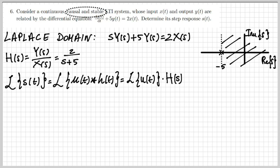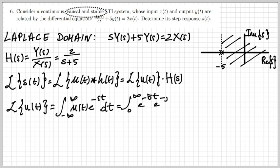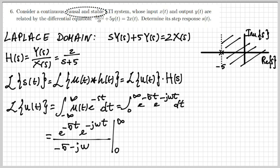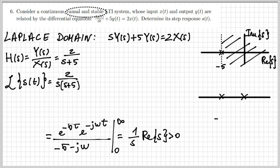The step response S(t) is the convolution of u(t) with the impulse response, so its Laplace transform is the product H(s) times the Laplace transform of u(t). Computing the Laplace transform of u(t) via a simple integral gives one over s, which converges only when Re(s) is positive. So the Laplace transform of S(t) is two over s(s + 5).